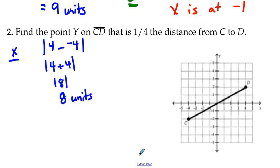We will take the absolute value of 4 and subtract the other coordinate, the x value of the coordinate of C. 4 minus negative 4 is 4 plus 4, which is the absolute value of 8, which is 8 units. Well, let's find while we're at it, one-fourth the distance from, in the x component, let's find a quarter of the way there.